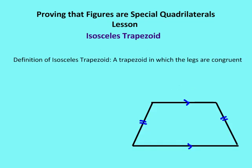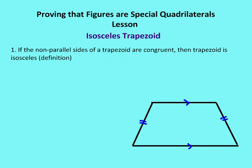Next, the isosceles trapezoid. A trapezoid is a quadrilateral that has exactly one pair of opposite sides that are parallel. An isosceles trapezoid is a trapezoid in which the legs are congruent. Here I have legs AB and CD — those two legs are congruent, and sides BC and AD are parallel. The first way to prove it: if the non-parallel sides of the trapezoid are congruent, then the trapezoid is isosceles by definition. So given a trapezoid, we just prove the two legs are congruent.